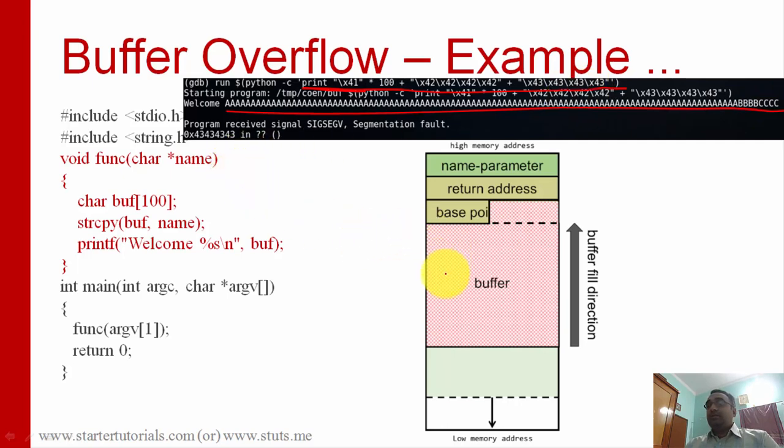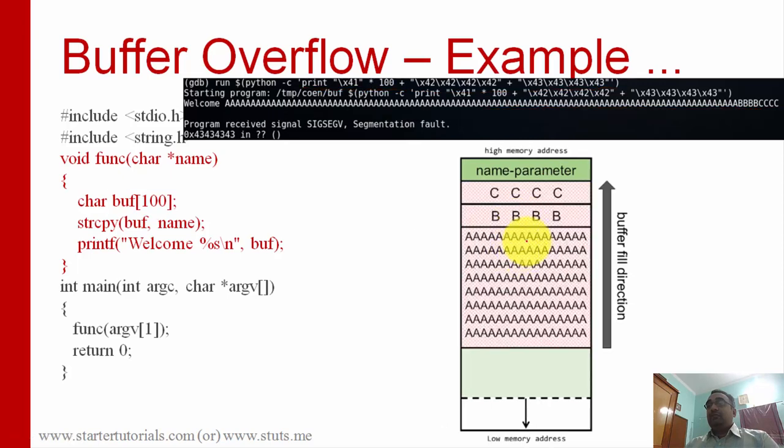Now see here, the size of buffer array is only 100, but here you are giving 100 A's followed by 4 B's and 4 C's. Now what happens? Actually this is the size of buffer. Now since you are giving BBB CCC also, extra data, it will start overwriting this data. That's why you can see here base pointer address location is being overwritten.